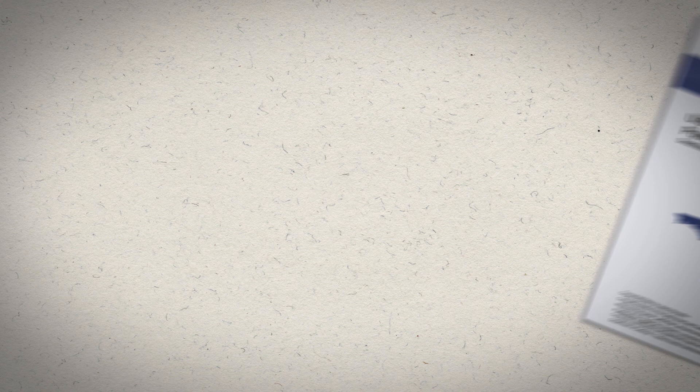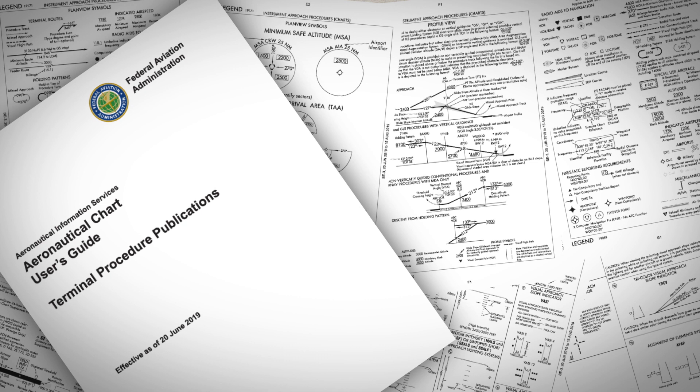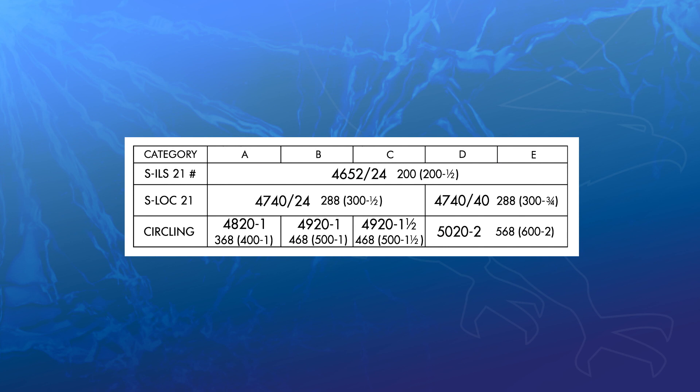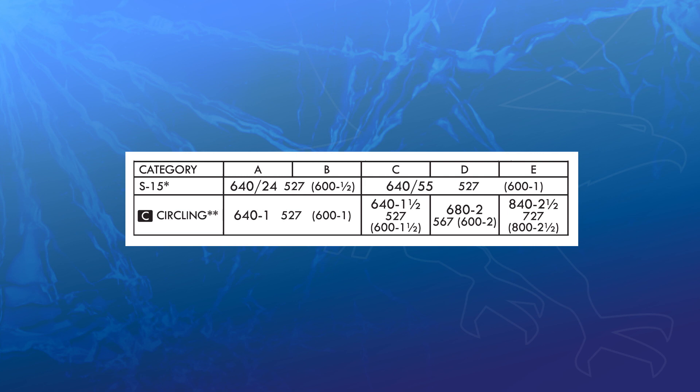The next part of the chart is the landing minimums table. This area is broken up into rows for each approach type offered. For example, on an ILS approach you may see other options like localizer or circling. On an RNAV approach, we might see options like LPV, LNAV/VNAV, LNAV only, and circling. These rows dictate the appropriate minimums to be flown based on what equipment or performance is available.